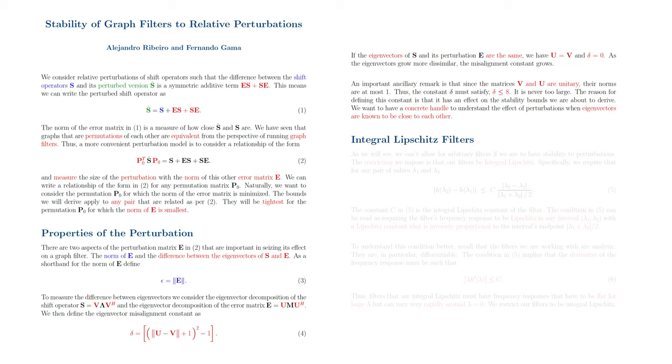We further introduce the notion of integral Lipschitz filters. We will see that we cannot allow for arbitrary filters if we are to have stability to perturbations. The restriction we impose is that our filters be integral Lipschitz. Specifically, we require that for any pair of values, lambda 1 and lambda 2, the frequency response of the graph filter, denoted here as H of lambda,